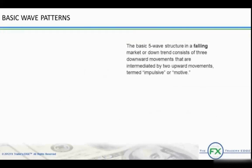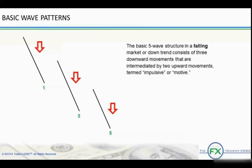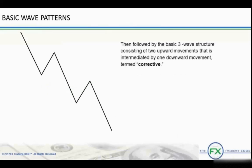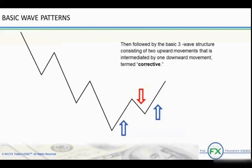The basic five-wave structure in a falling market or downtrend will repeat itself in the opposite direction when a complete cycle occurs. A downward wave structure will consist of three downward movements that are intermediated by two upward movements. Just as in an uptrend, a complete five-wave pattern moving downward is termed impulsive or motive. Then it is followed by the basic three-wave structure consisting of two upward movements that is intermediated by one downward movement, termed corrective.